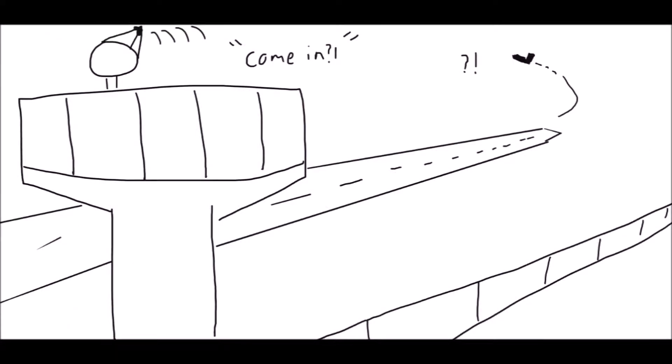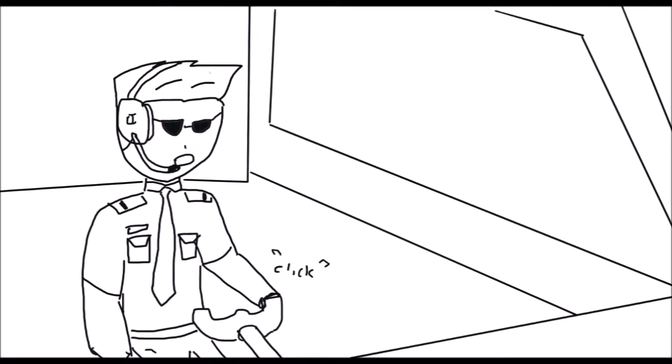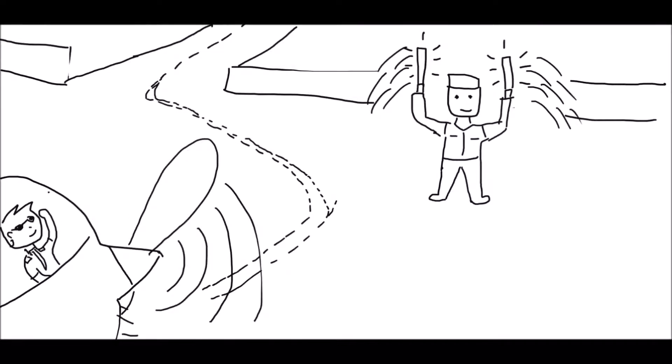You are cleared for taxi to Delta. Taxi to Delta, 61. I raised my hand to the marshaler to tell him I'd be taxiing out. The marshaler waved his hand and sticks together, this way, to the front, to the left. I waved thank you.